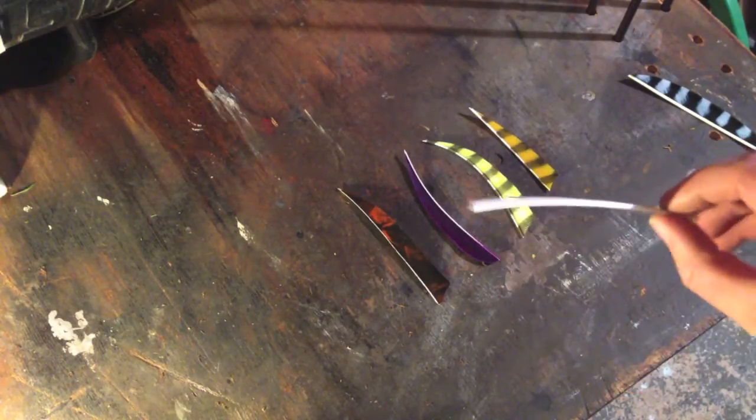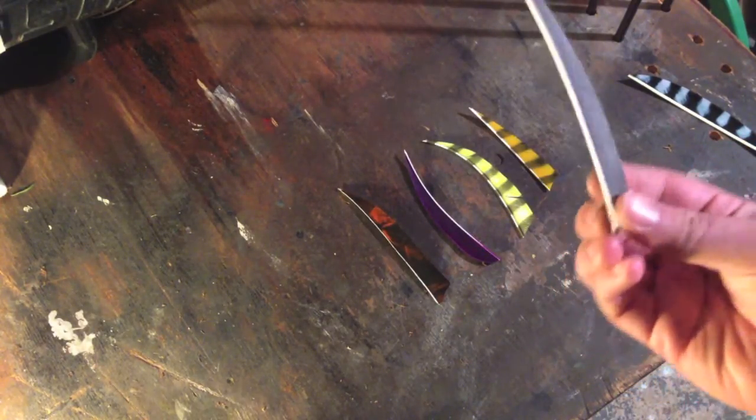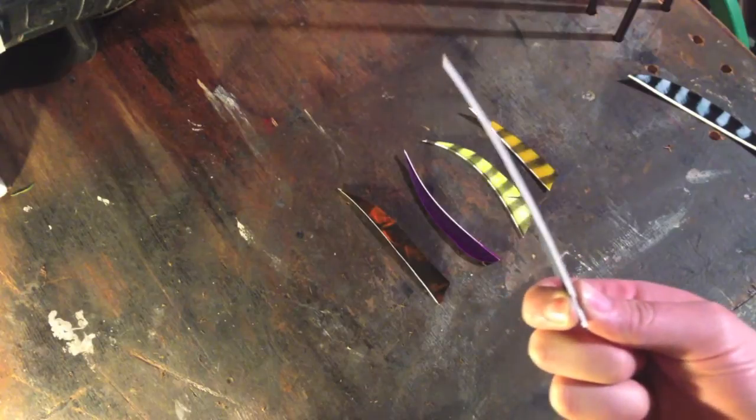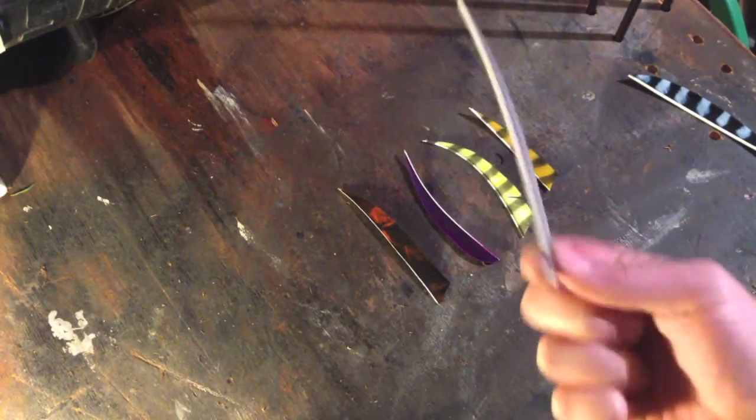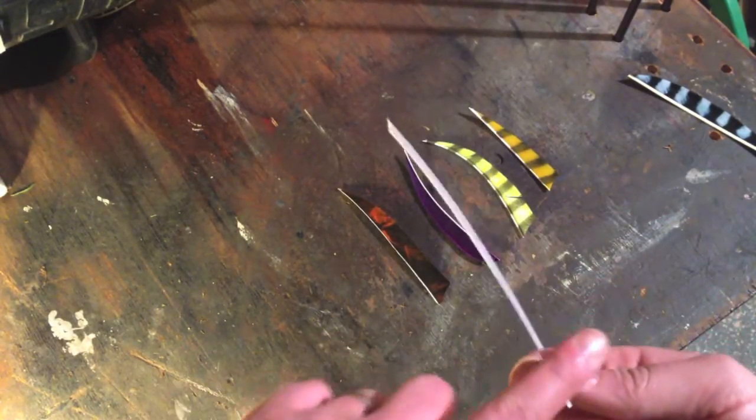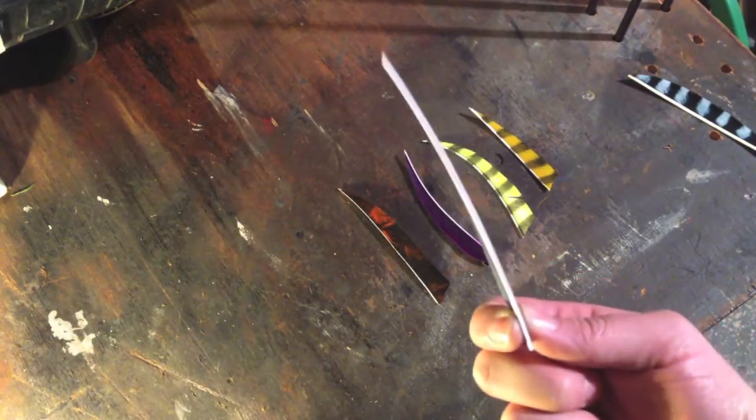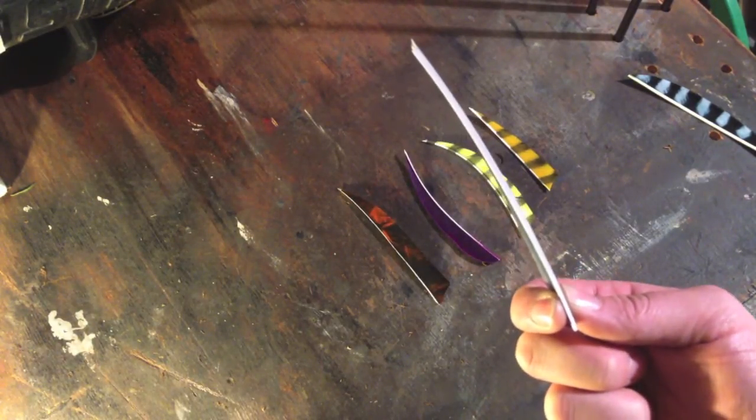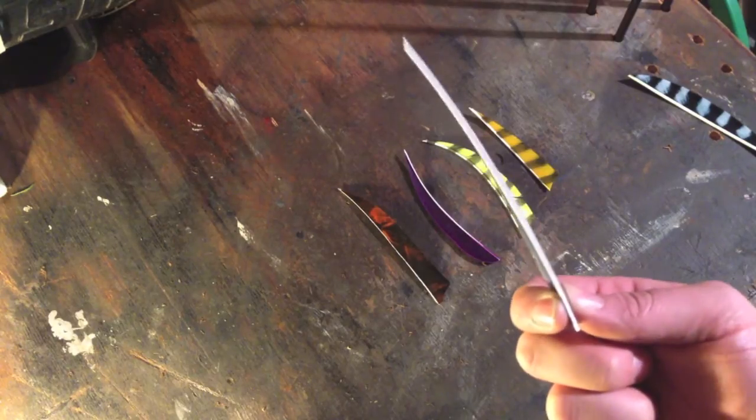Now we don't know whether it's a right or a left wing, so what we need to do is hold it at the base which is at the back of the feather and look down at what was once the quill. It will lean to the left, suggesting that it's a left wing feather.